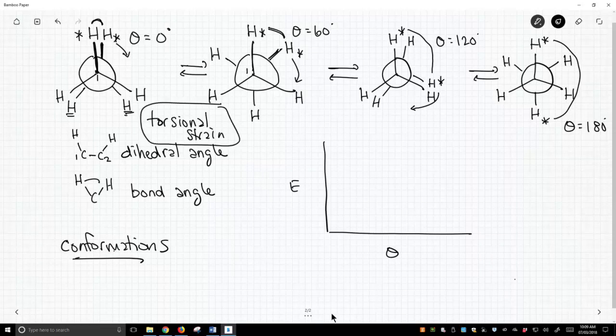In fact, people call this conformation an eclipsed conformation. This is going to be a high energy conformation. So let's label some angles down here. And that energy is going to be high, and we'll quantify that in just a second.